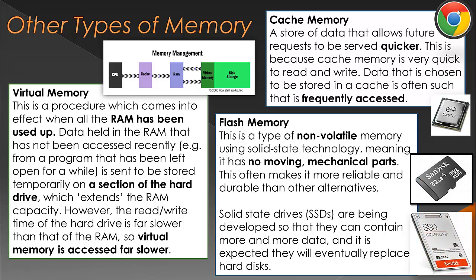Finally, we've got flash memory. Flash memory is a type of non-volatile memory — it doesn't lose its data when turned off. It also uses solid state technology, meaning it has no moving mechanical parts. It uses logic circuits — I believe NAND gates — in the millions or billions to store data using binary. Flash memory has actually been around since the 1980s, but recently it's been realised that it can replace a lot of the secondary storage we commonly use.